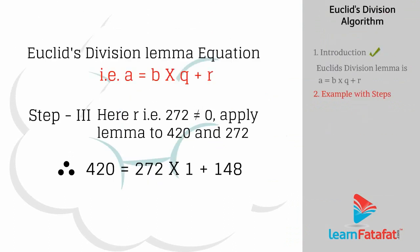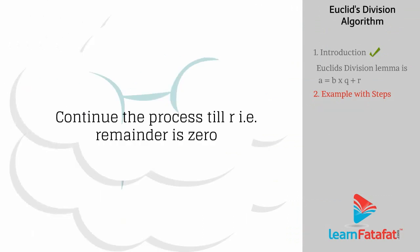Step 3. Here, R, that is 272, is not equal to 0. Apply Lemma Division to 420 and 272. Continue the process till R, that is remainder, is equal to 0.